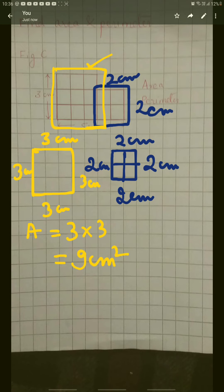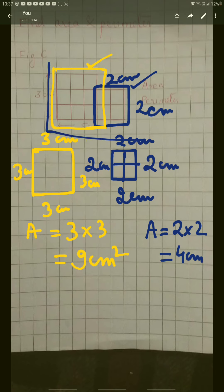The area of the yellow square is 9 centimeter square. Now I am going to find the area of the blue square. Each side is 2 centimeters, so the area is 2 into 2 equals 4 centimeter square.